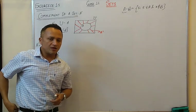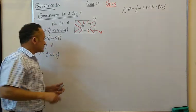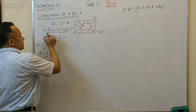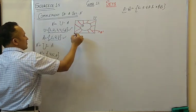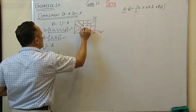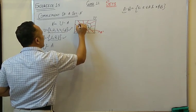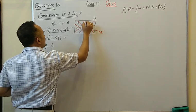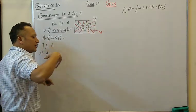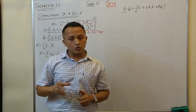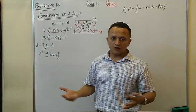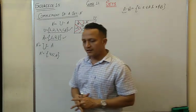A complement is Universal minus A. In our example, the universal set contains {1,2,3,4,5,6} and set A contains {1,2,3}, so 1, 2, 3 are inside the circle for A. The elements 4, 5, and 6 are not inside set A — they lie external to set A but still within the universal set. So 4, 5, 6 form the complement of set A.